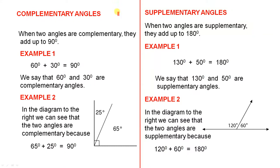Complementary Angles. When two angles are complementary, they add up to 90 degrees. Example 1: 60 degrees plus 30 degrees equals 90 degrees. We say that 60 degrees and 30 degrees are complementary angles. The reason for this is very simple—they add up to 90 degrees.